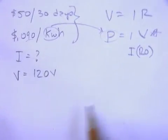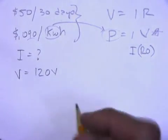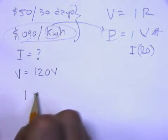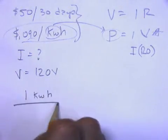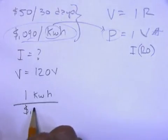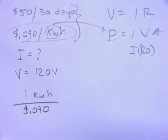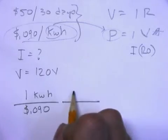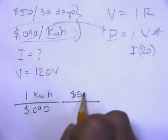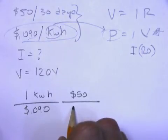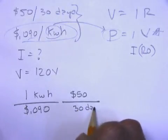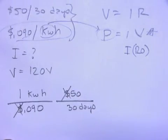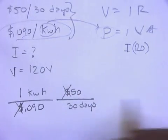So here's how I'm going to do this. I'm going to do a little fancy dimensional analysis. So I'm going to invert this one right here. So I'm going to say one kilowatt hour is equal to 0.9 cents. So I'm going to say that I'm using $50 per 30 days. So now my dollar signs are gone.